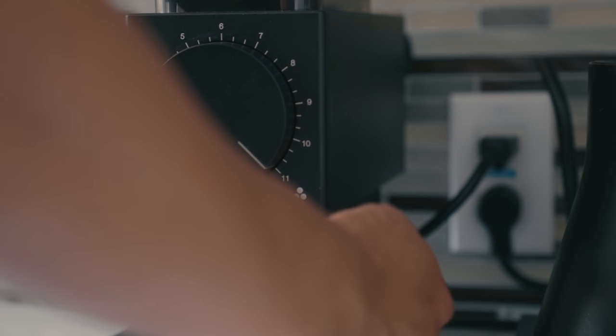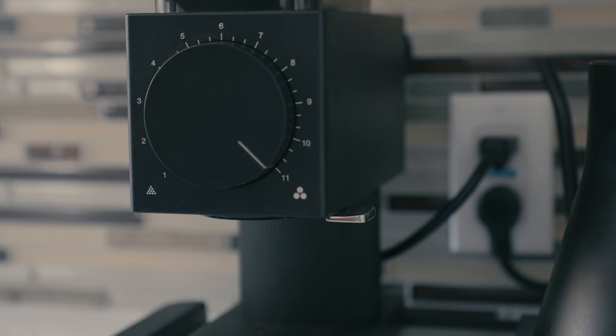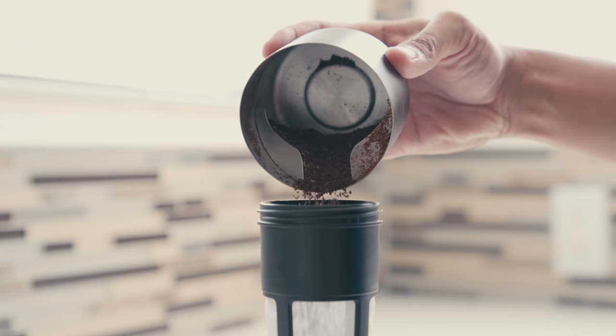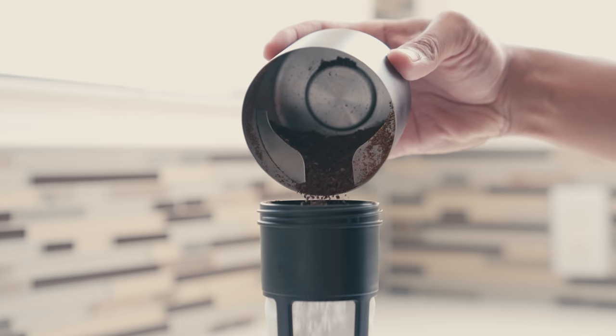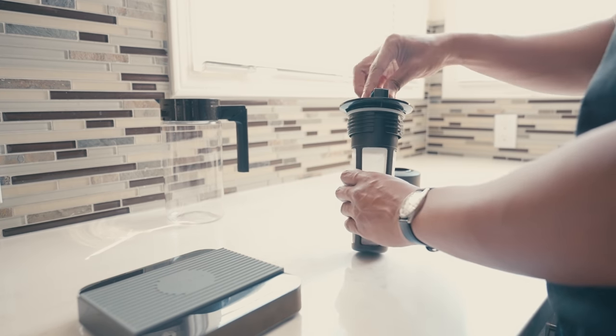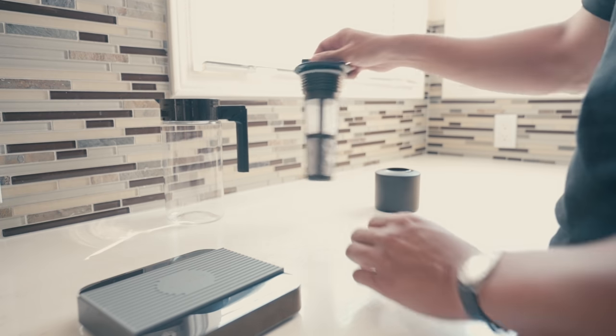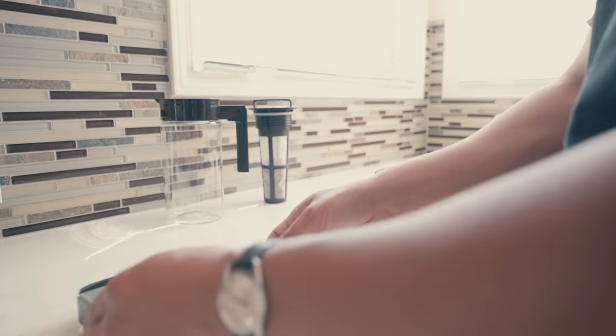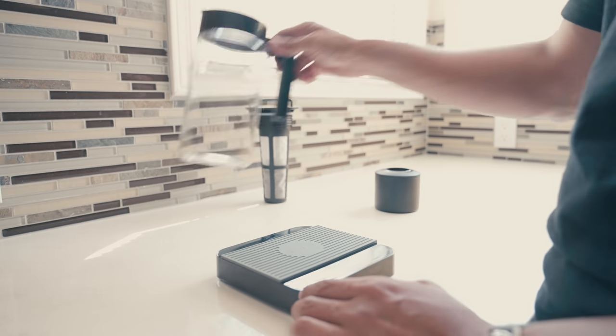After you have ground your beans, load up the brew basket. Now place the carafe onto the scale and measure out 960 grams of room temperature filtered water.